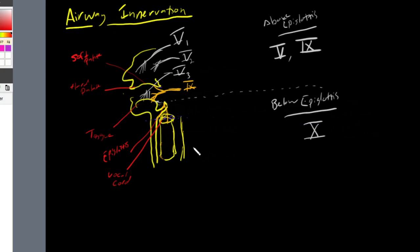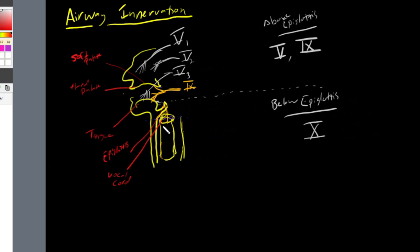In the last video, we talked about airway innervation with respect to everything above the epiglottis. In this video, we're going to talk about airway innervation regarding everything below the epiglottis. Everything below the epiglottis — the sensory and motor function — is governed by cranial nerve 10, otherwise known as our vagus nerve. Just like in the previous video where we separated an upper and lower portion of our airway with respect to the epiglottis, we're going to do the same thing with a region that is below our epiglottis.